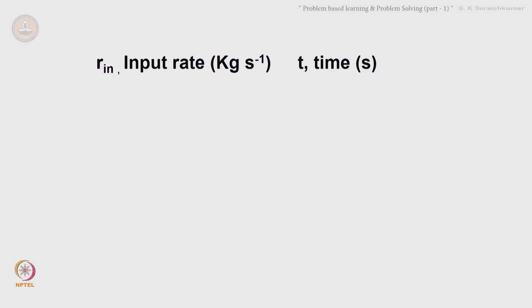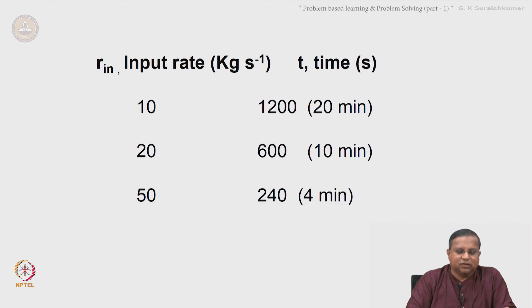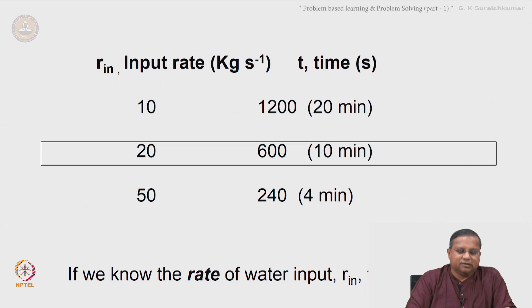You need to know the rate, and once you know the rate, you will know the time. If it is 10, it is 1200 seconds and so on. The typical rate is about 20, and therefore let's choose that to be the input rate here, and that leads to a time of 600 seconds. The mass is 12,000 kg, 12,000 by 20, 600 seconds or 10 minutes.